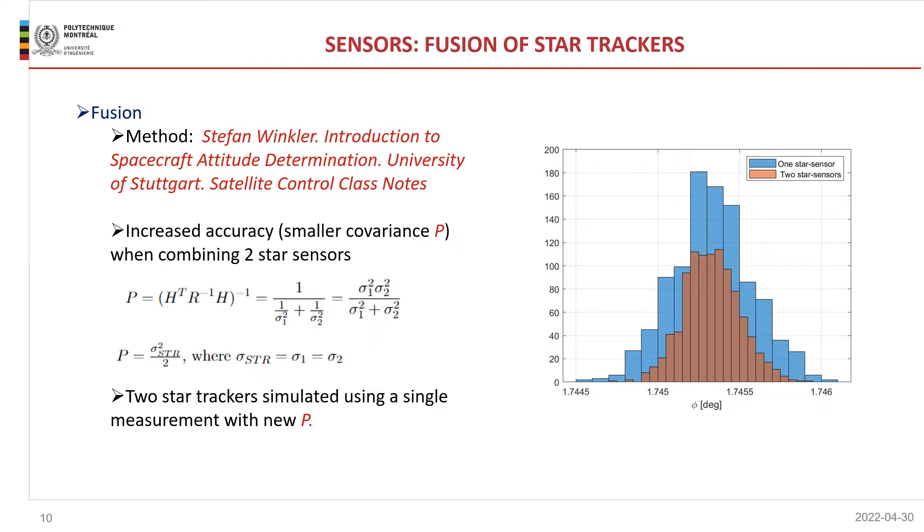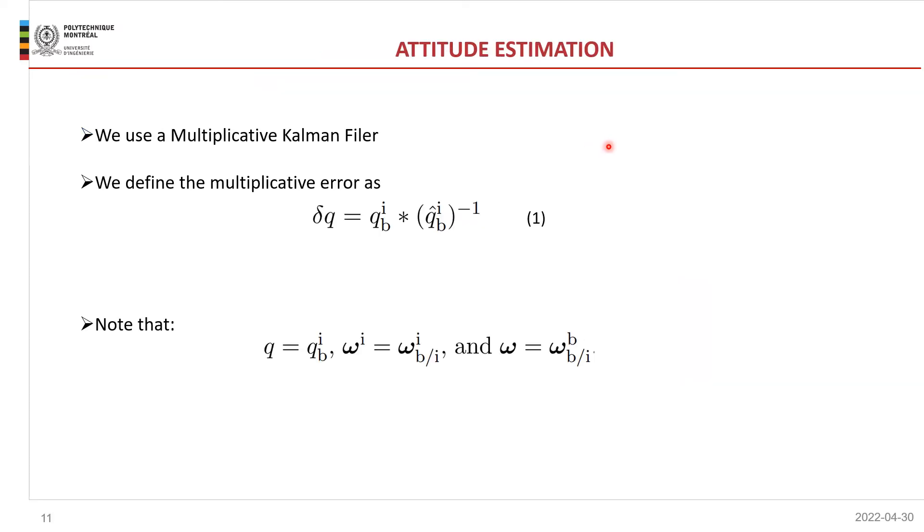Now it's time to discuss the Kalman filtering, and my colleague Adam is going to take over. So now we want to describe our proposed solution to fuse the data of the gyro and the two star trackers. The goal is to estimate the attitude. Our approach is based on the multiplicative extended Kalman filter.